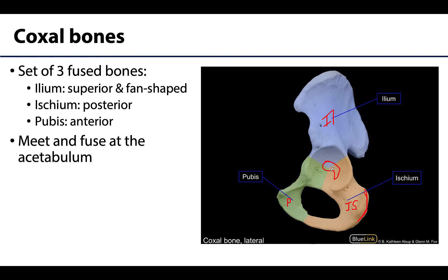This area where that cartilage sat, where these bones all articulate, is called the acetabulum. We'll talk quite a bit more about this during the musculoskeletal portion of your curriculum. This is where that femoral head will articulate with the coxal bone to form the hip joint.